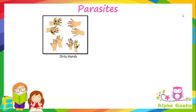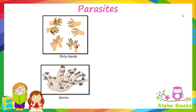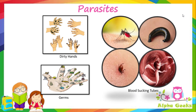Endoparasites enter our body when we eat unhygienic food or eat with unclean hands. Parasites do not have teeth — they mostly have sucking tubes in their mouths.